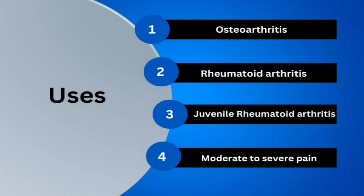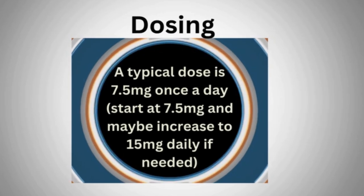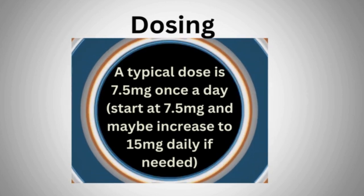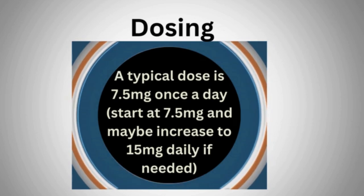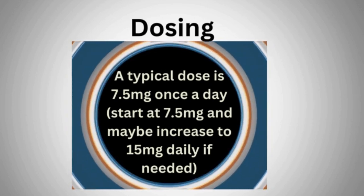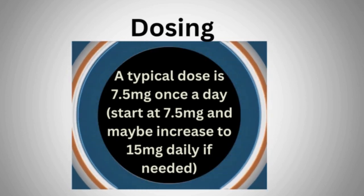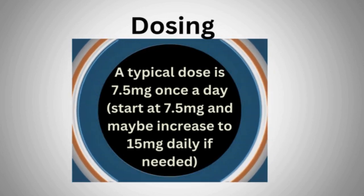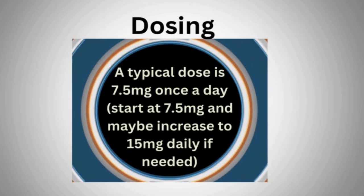You don't want to be using two NSAIDs concurrently — we'll talk about that when we discuss precautions. Regarding the dose of meloxicam, a typical dose is 7.5 milligrams once a day. It may increase to 15 milligrams daily if needed. The maximum recommended dose is 15 milligrams, though some doctors have prescribed up to 30 milligrams. Your individual circumstances are best discussed with your doctor.